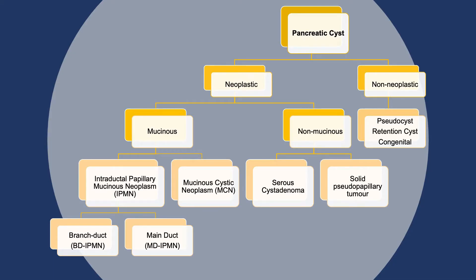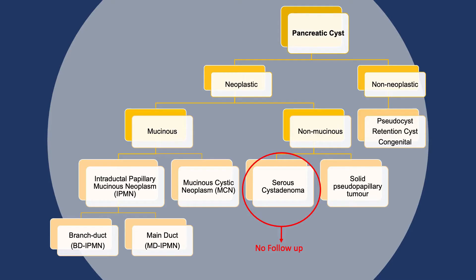How can we classify them? The first broad way is into neoplastic and non-neoplastic. Non-neoplastic includes things like pseudocysts and simple retention cysts — we generally do nothing with those unless they're symptomatic, and they have no risk of malignant progression. Neoplastic cysts are split into mucinous and non-mucinous. The most common non-mucinous neoplastic cyst is the serous cyst adenoma. They are relatively common but have no malignant potential, so we don't follow them up. Sometimes it can be difficult to tell the difference between an SCA and the mucinous lesions.